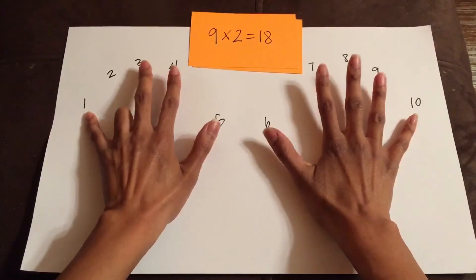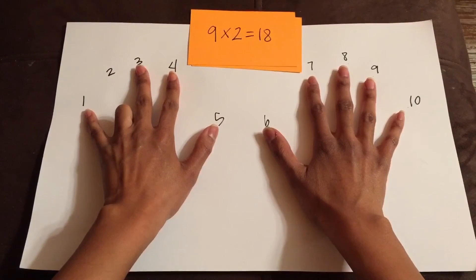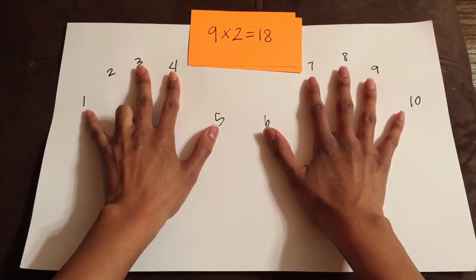And then on the right side, I have 8 fingers up. So I know my second digit is going to be an 8, so the answer to 9 times 2 is 18.